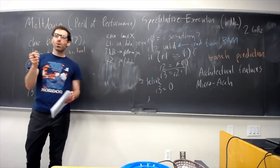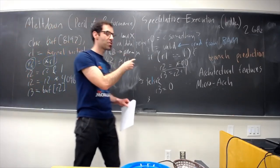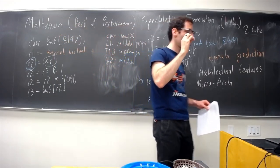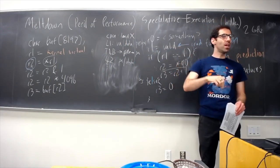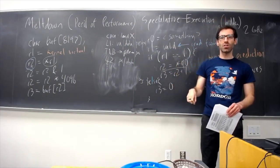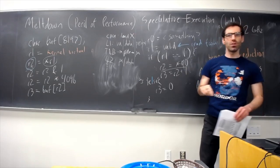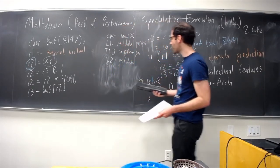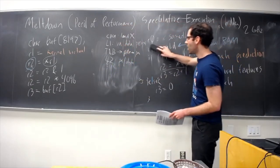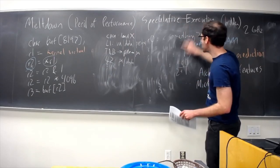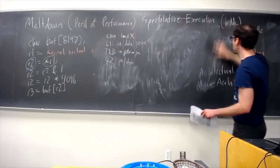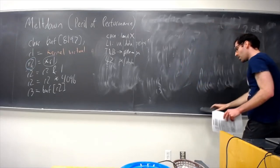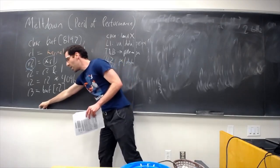So, there's a question that we want to ask, to do meltdown. The question we want to be able to ask is, is a piece of data in the cache? Knowing this is going to turn out to let us, kind of, read in memory that we're not supposed to. So, how would we actually tell if something was in the cache? There is a technique.